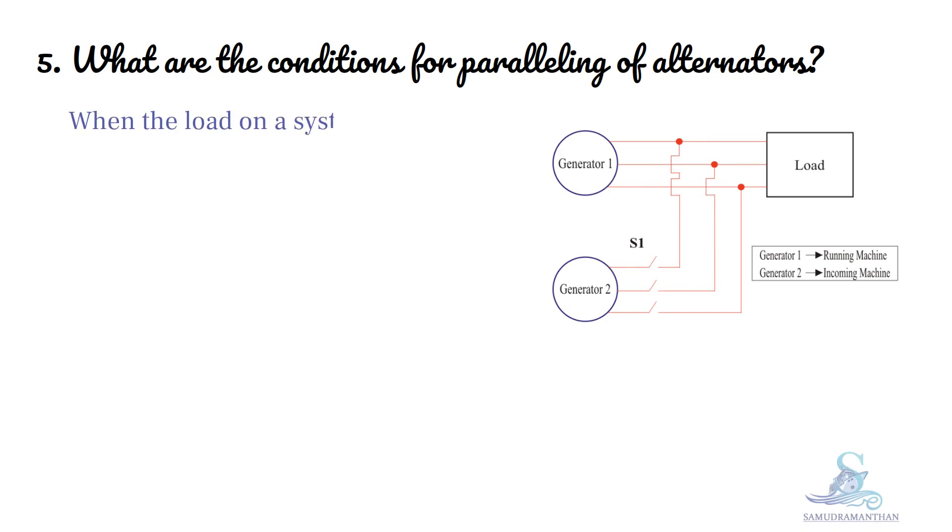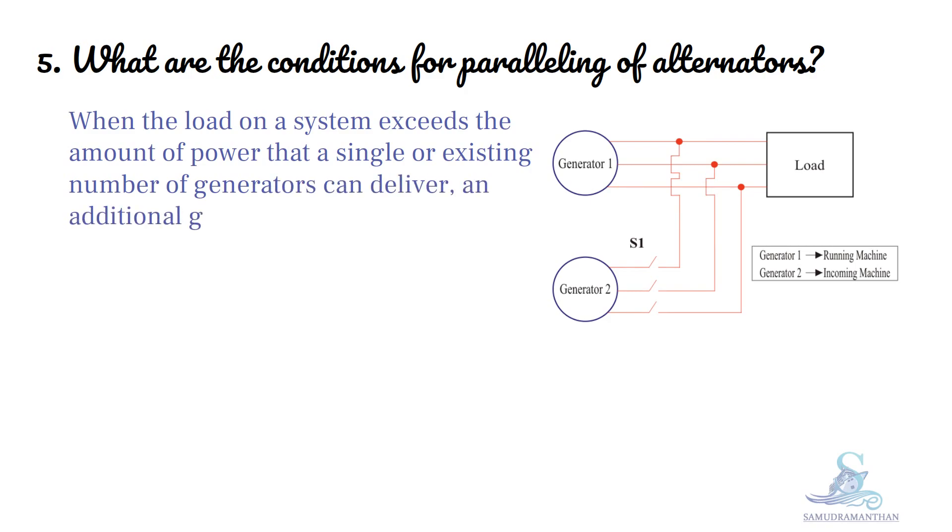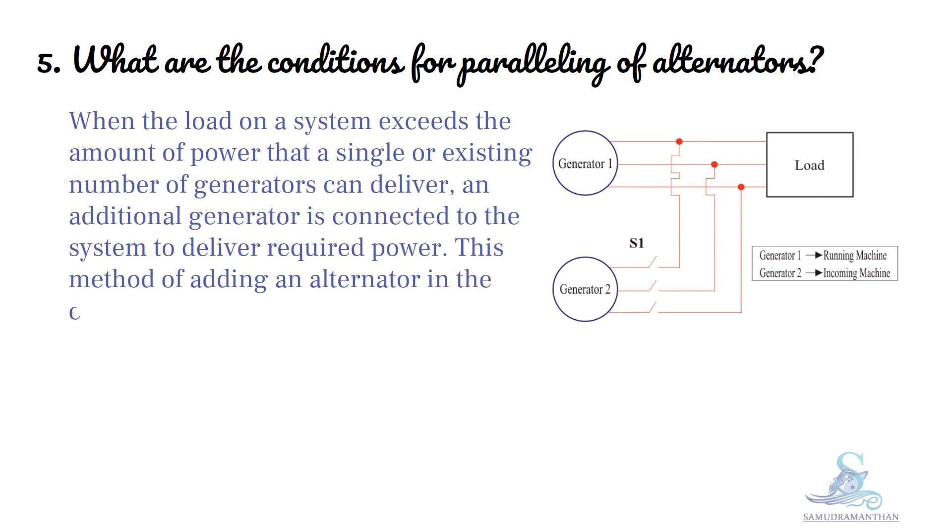When the load on a system exceeds the amount of power that a single or existing number of generators can deliver, an additional generator is connected to the system to deliver required power. This method of adding an alternator in the existing system is called Parallel Operation of Alternators.